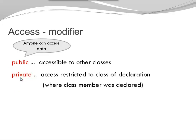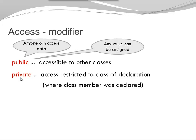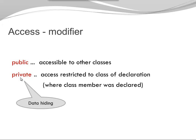If you have a public field, anyone can access this data, and any value can be assigned to your field. Now this doesn't sound like the best of all good ideas. If you have a private field, we talk about data hiding. We have this most restricted situation that allows us to protect our data. This makes it much easier to guarantee our data integrity.